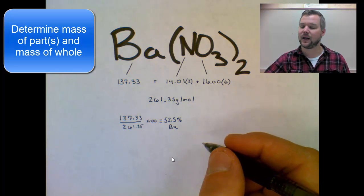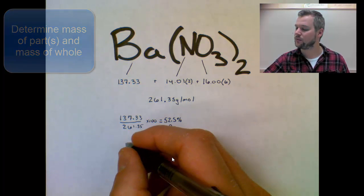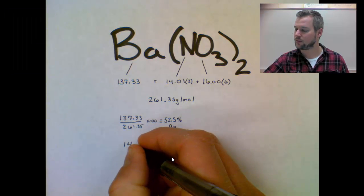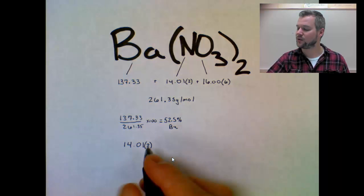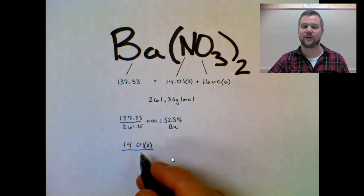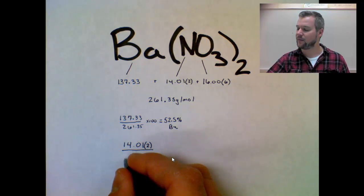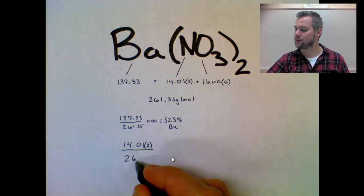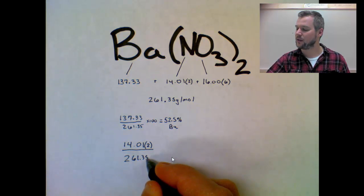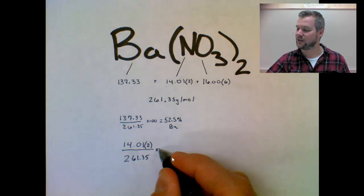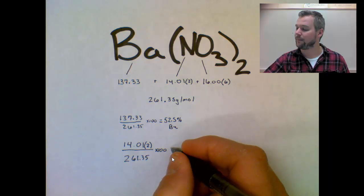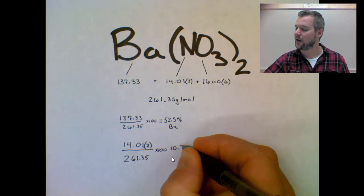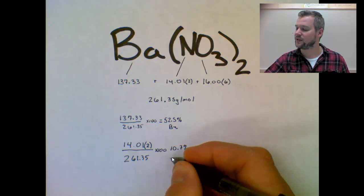Then we have 14.01 times 2. So that whole thing, that's how much nitrogen is in that whole compound. There's two copies of it, so you have to multiply by 2, divided by 261.35, times 100 to make it a percentage, and that equals 10.7%. Again, rounding to the nearest tenth.